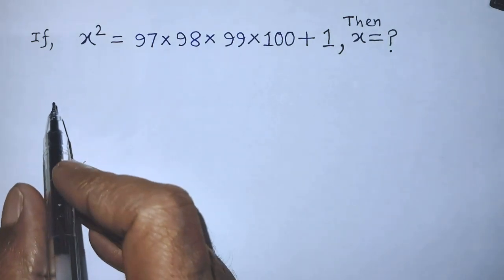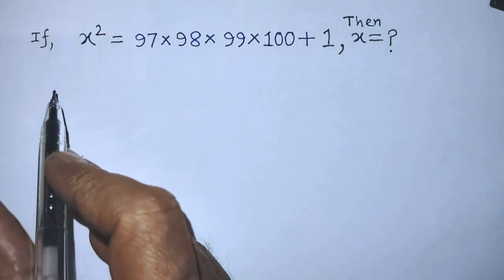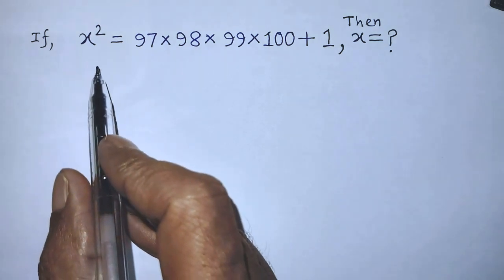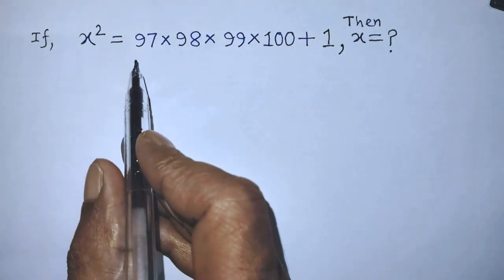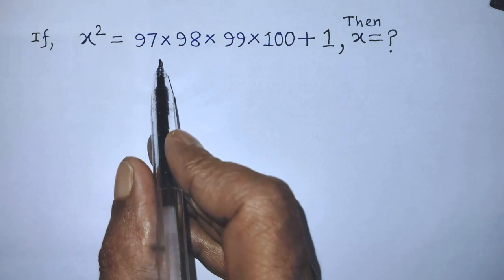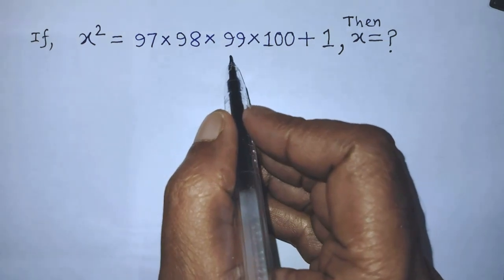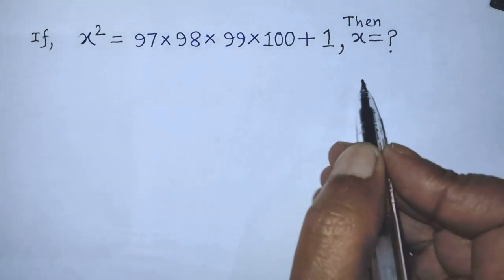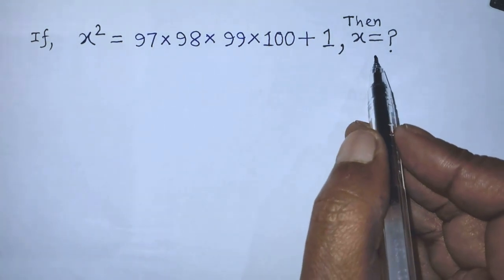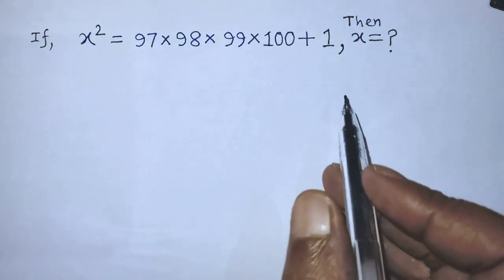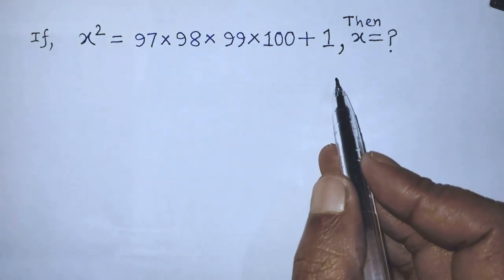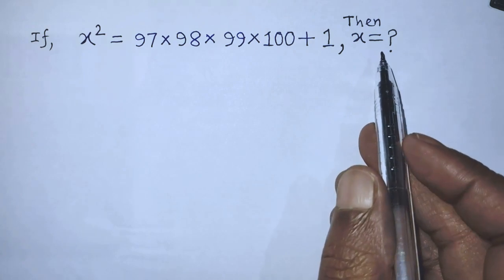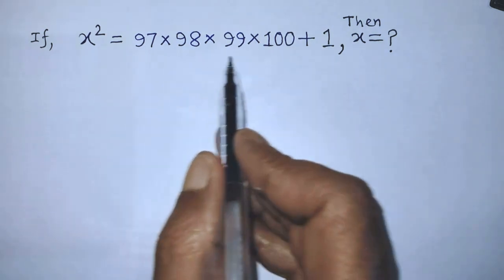Hi guys, welcome back to my channel Ali Masplog. Today our question is: if x to the power 2 is equal to 97 times 98 times 99 times 100 plus 1, then find the value of x. In this video I am telling you how to find the value of x from this exponential equation.